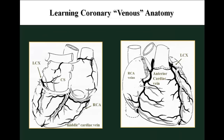You also need to understand the cardiac veins, not only the arteries. The anterior cardiac vein parallels the left anterior descending and requires careful attention. There are right coronary marginal veins, the coronary sinus, and the middle cardiac vein, which frequently accompanies the posterior descending or wraps around it. You need to separate all of these anatomically.